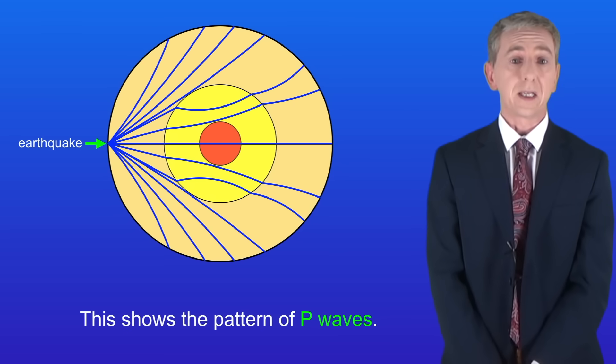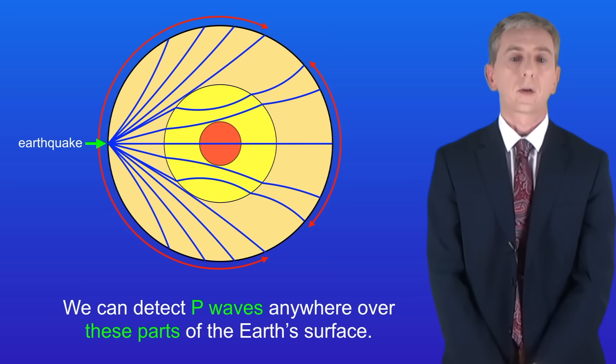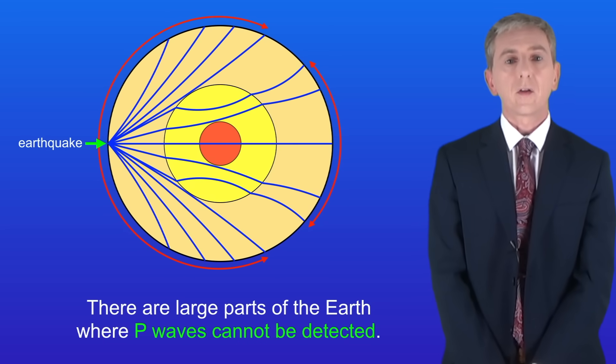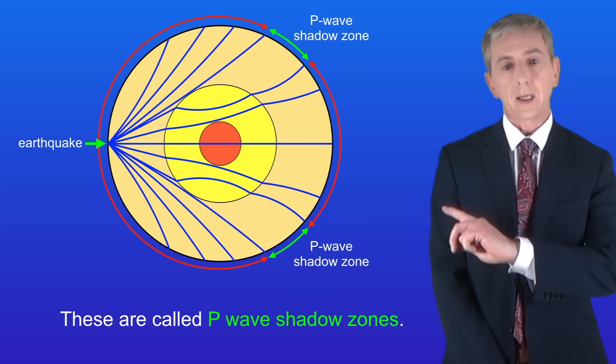This shows a pattern of P waves. We can detect P waves anywhere over these parts of the earth's surface. However once again there are large parts of the earth where P waves cannot be detected. These are called P wave shadow zones and I'm showing them here.